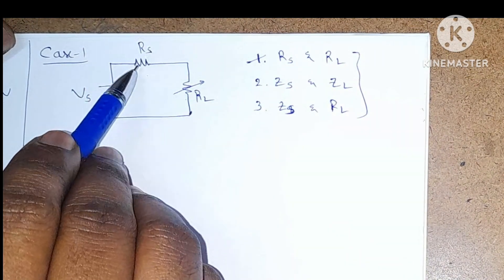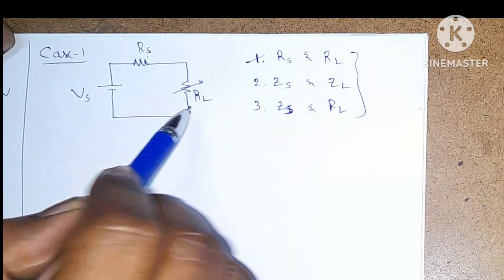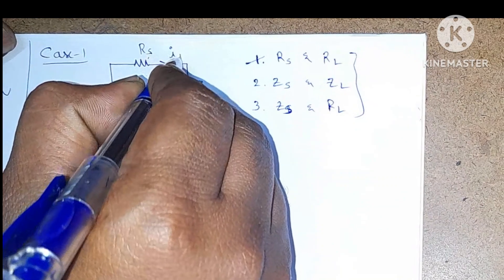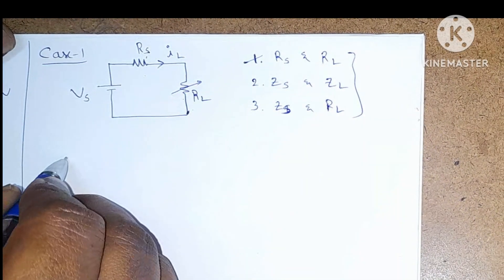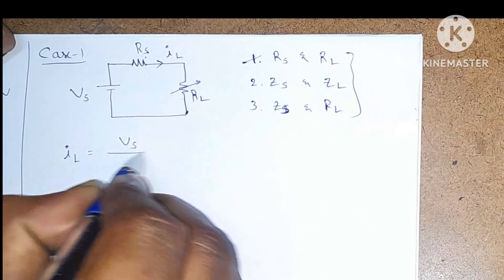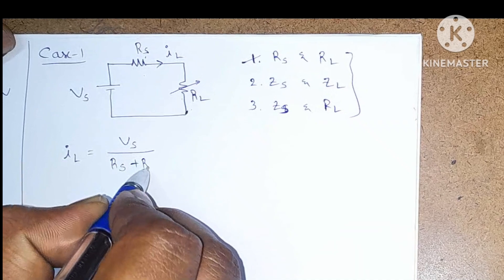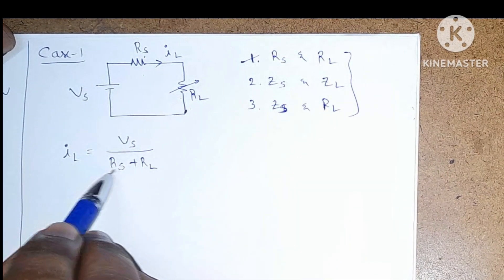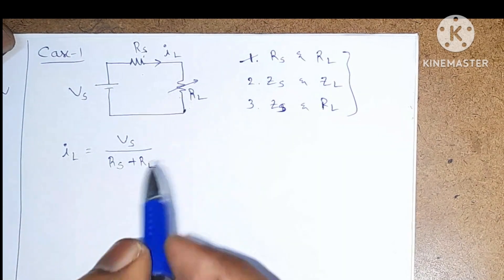In Case 1, source impedance is pure resistance and load impedance is pure resistance. Consider the current flowing through this circuit as I_L. According to Ohm's law, I_L is equal to Vs divided by (Rs + Rl), since these two resistors are connected in series, so the equivalent resistance is Rs + Rl.